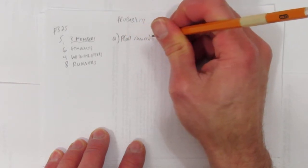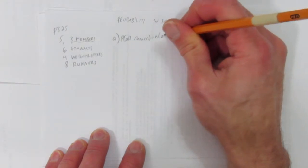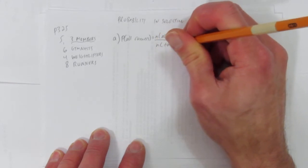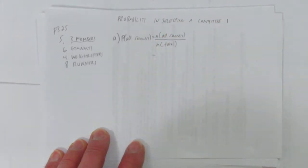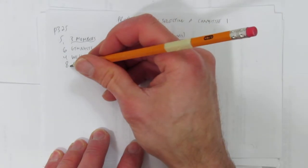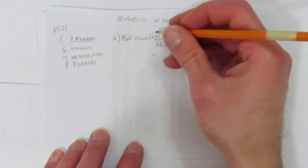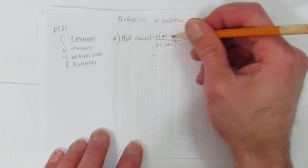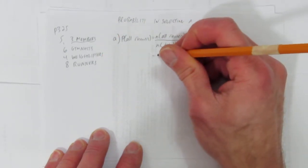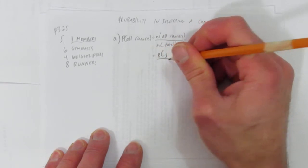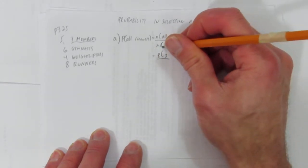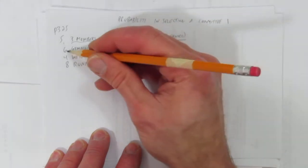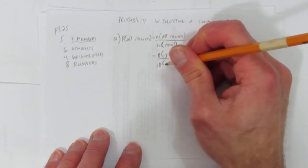Well, that's just the number of ways we can choose all runners over the number total. So there are eight runners, and we need three people. So the number of ways you can choose three people, and they all be runners. The number of ways to choose all runners is from the eight runners, choose three of them. How many ways are there to choose total? Well, there are eighteen people, and we need three of them.